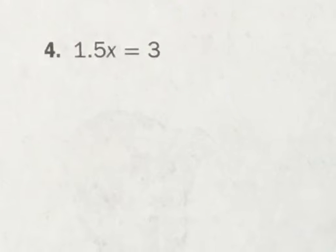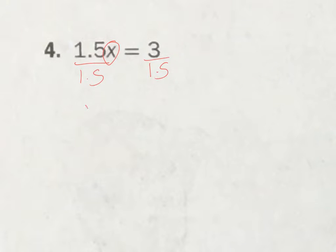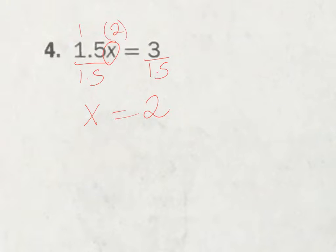Number 4. I get my x. Divide this by 1.5, and I've got to divide this by 1.5 as well. That leaves me with x equals... on my calculator, I'm going to do 3 divided by 1.5, and it's going to get me 2. Now if I put 2 in here times 1.5, it gets me 3. It all checks out.